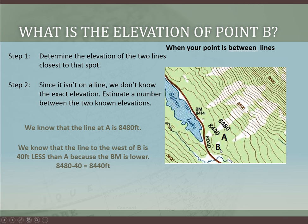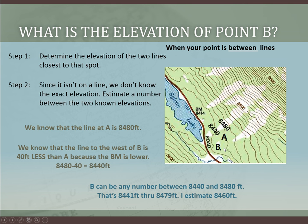Now, B is not on this line, so it's not 8,440. And it's not on this one, so it's not 8,480. It's between them, so it can be any number between them — that's anything from 8,441 feet through 8,479 feet. Any number in that range would be considered acceptable, because we don't know the exact number. I'm going to estimate that since B looks roughly halfway between the two lines, it's halfway between in height as well — it's 8,460 feet. But again, anything in this range would be an acceptable answer.